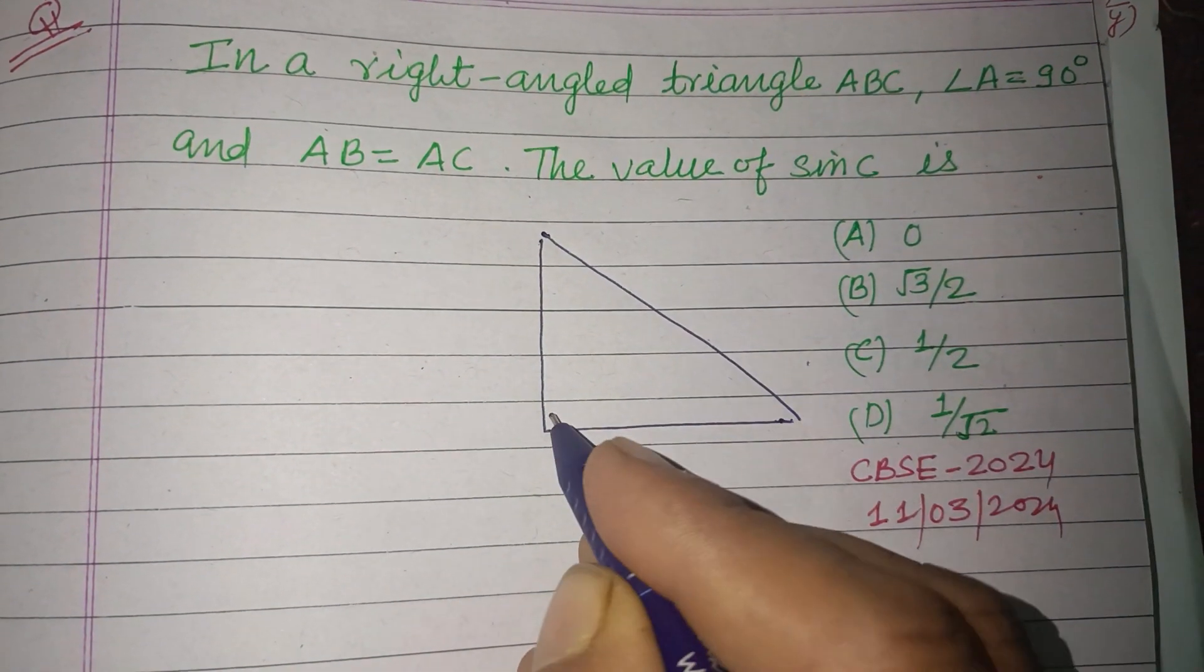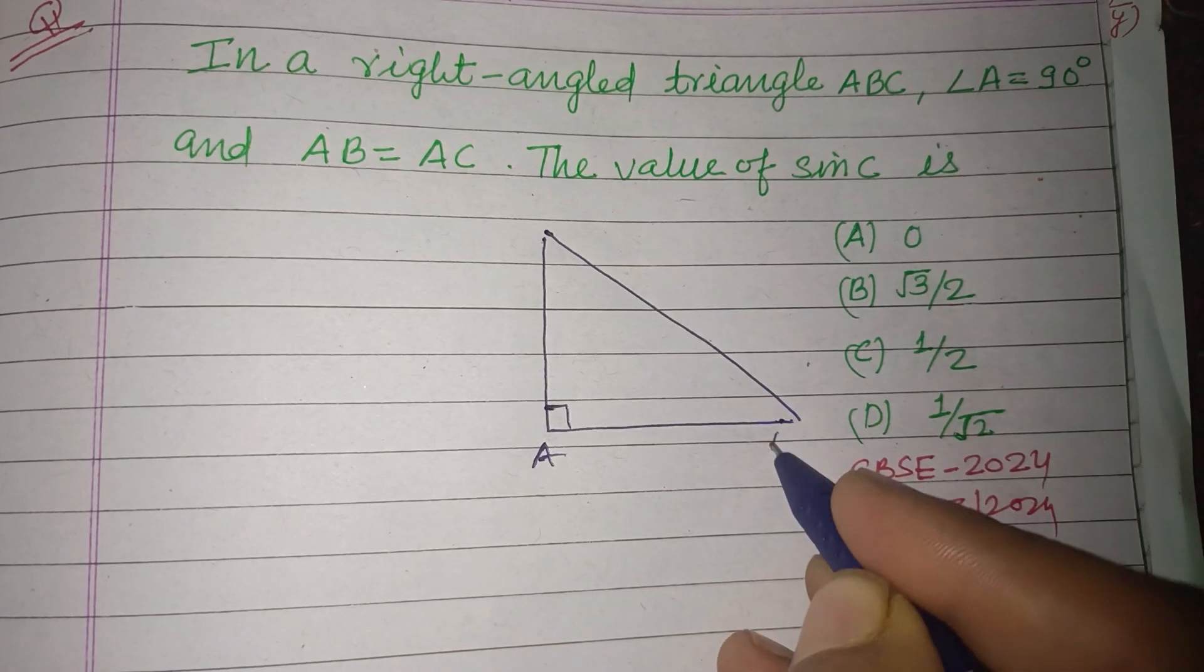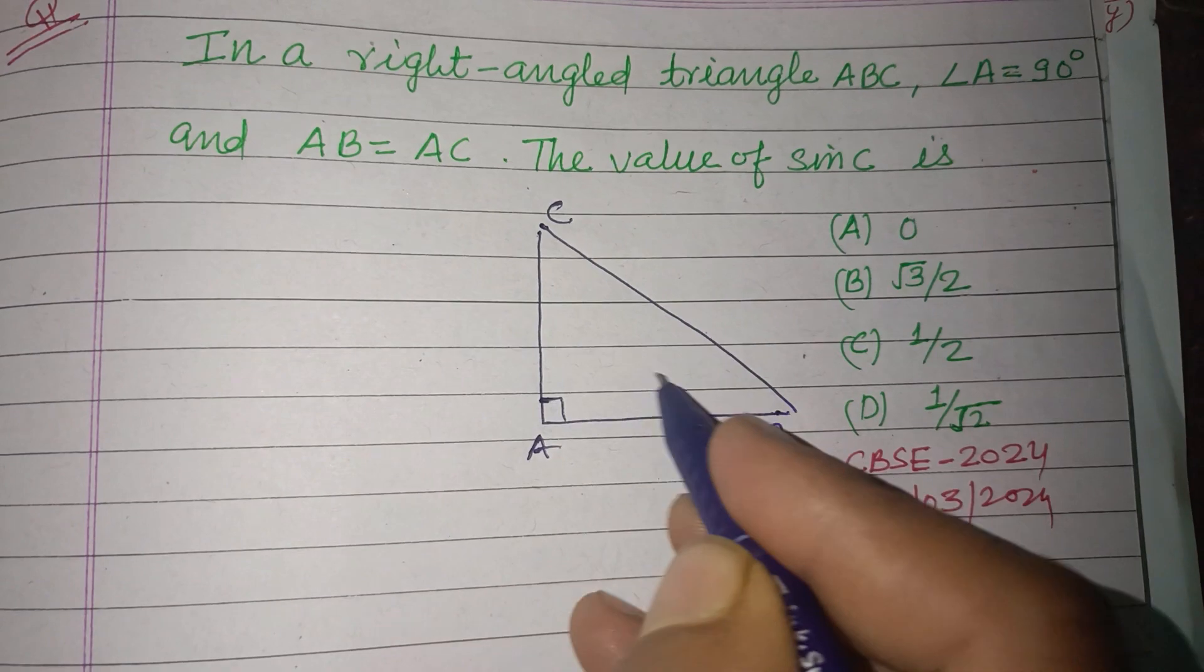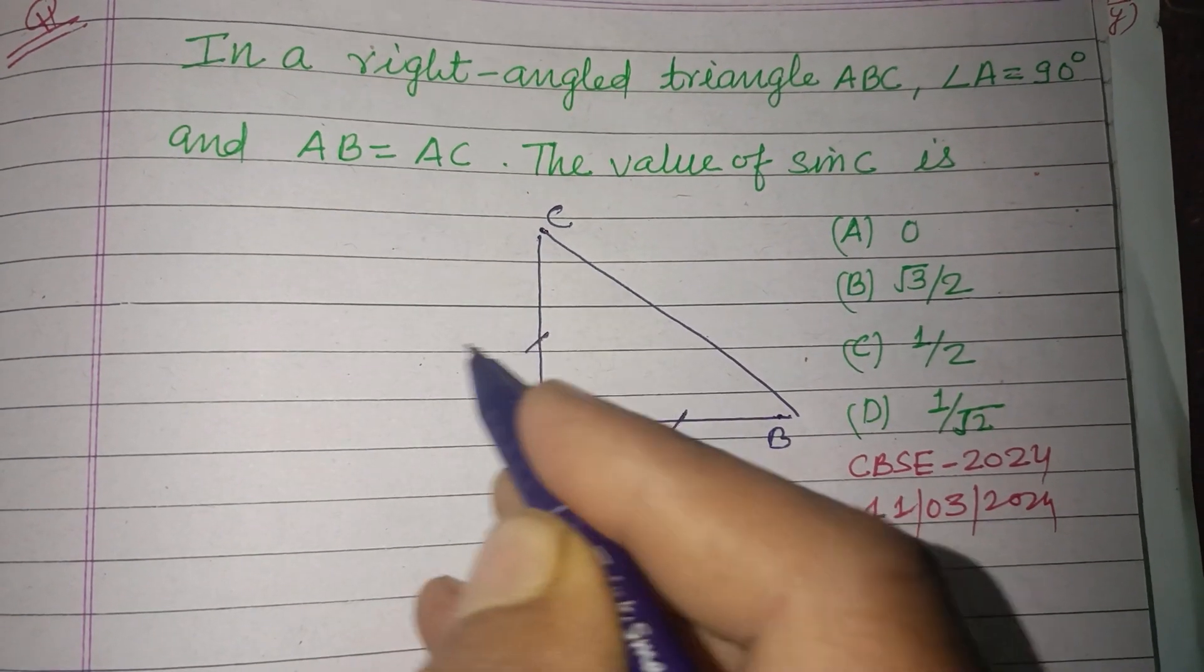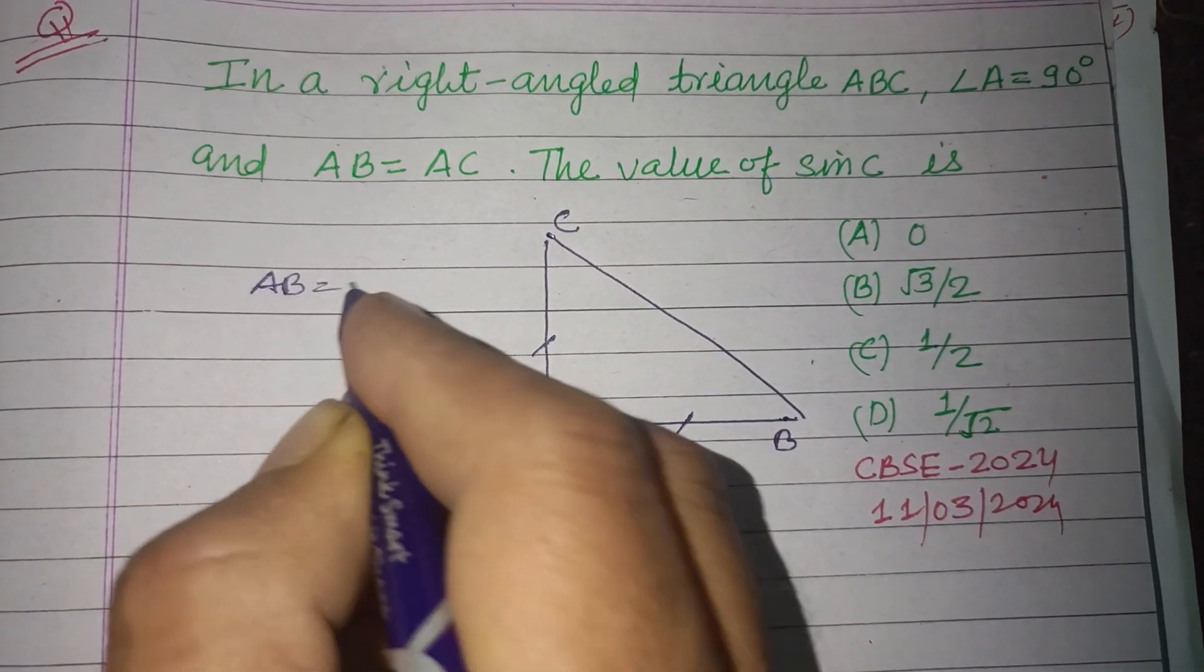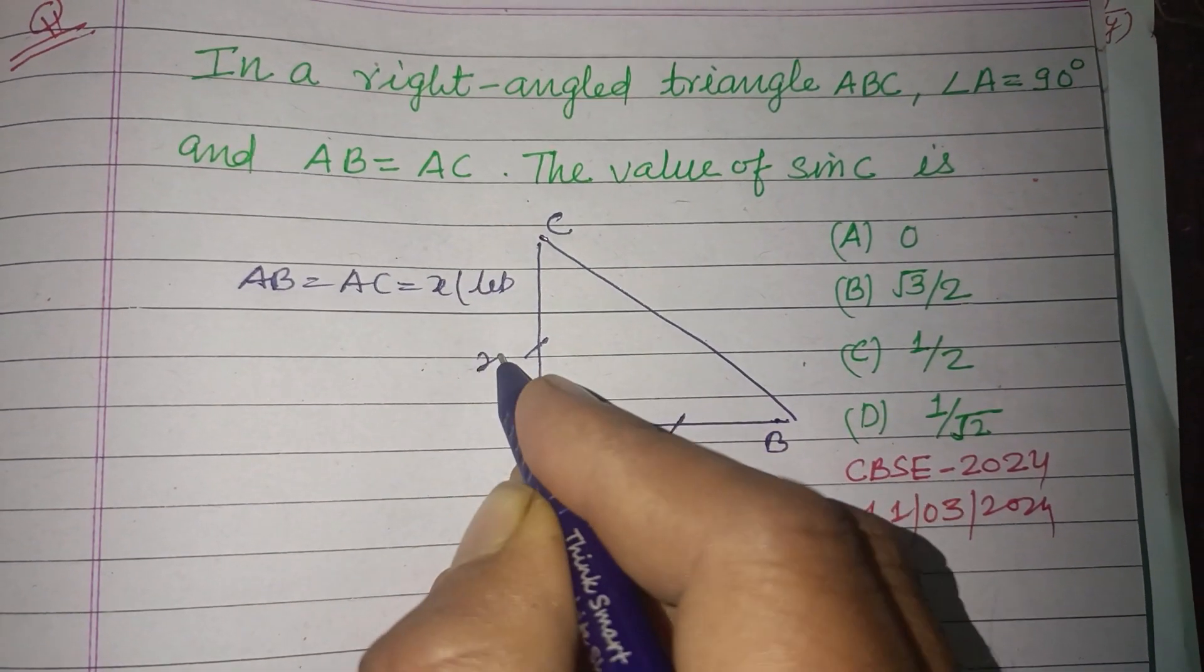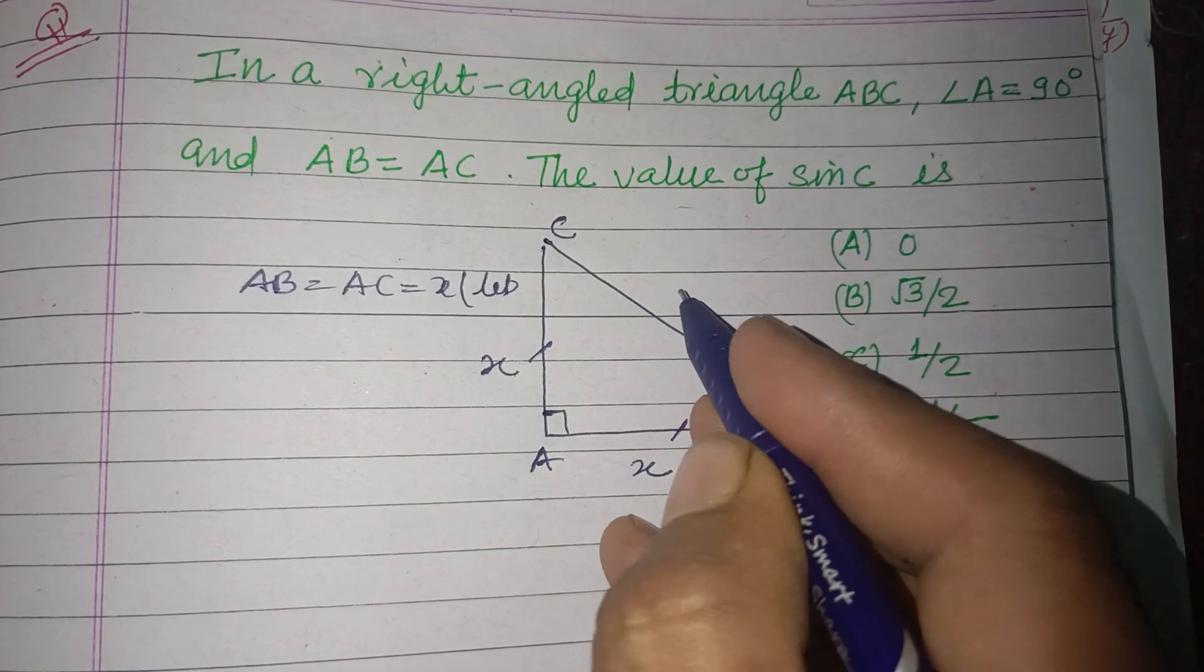Angle A is 90°. So this is A, this is B, this is C. And AB equals AC. AB is given to us as AC. AB equals AC, let it be x. So this is x, this is x, and this is a right-angled triangle.